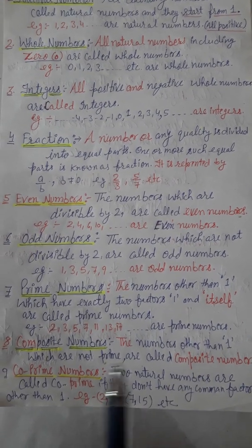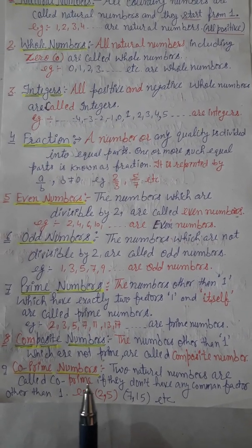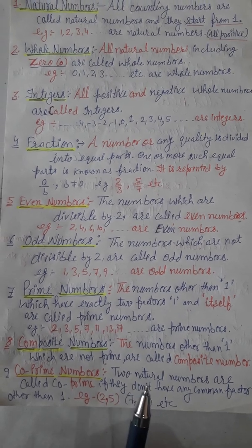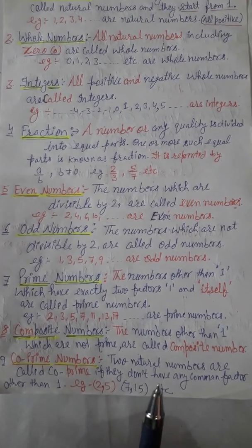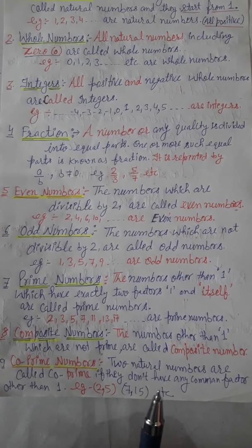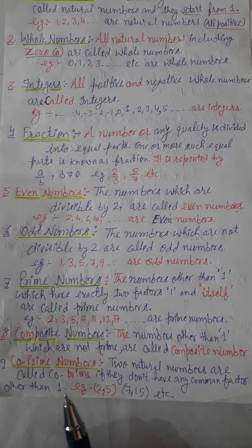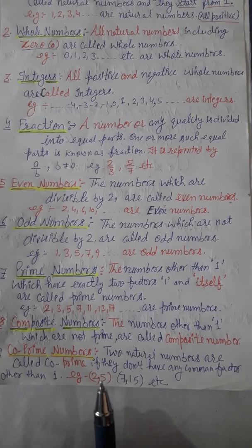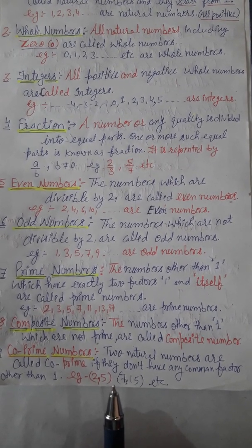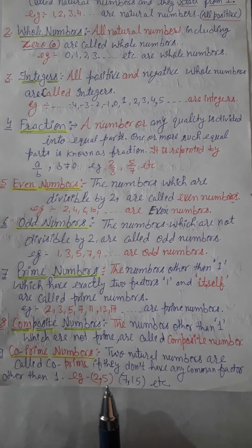Co-prime numbers: Two natural numbers are co-prime when there is no common factor between them except one. For example, 2 and 5 have no common factors, so they are co-prime numbers.